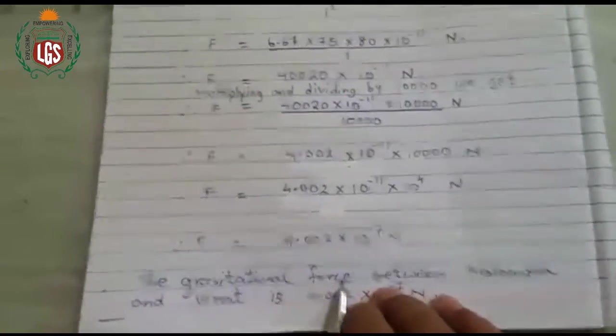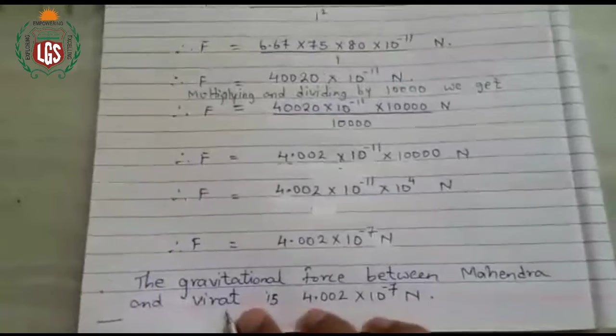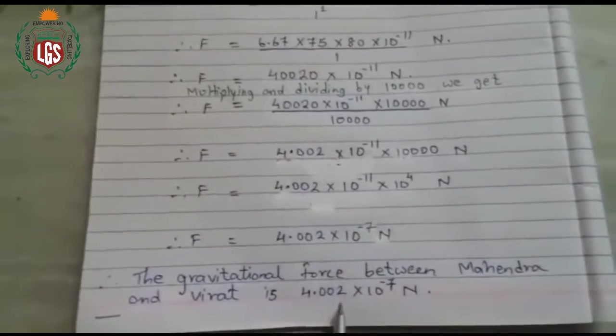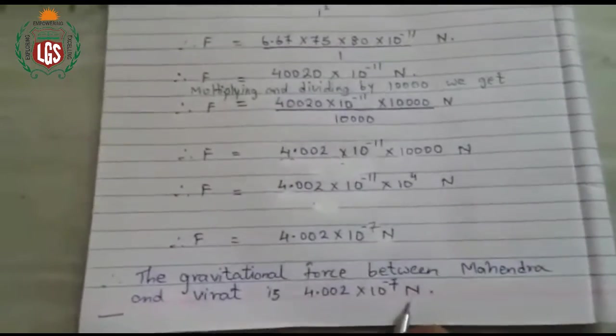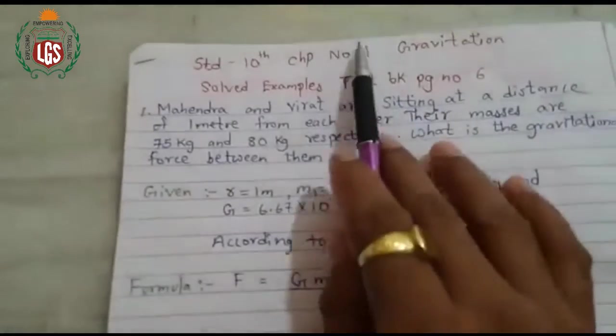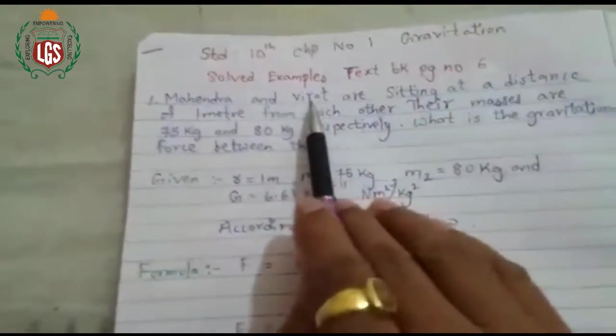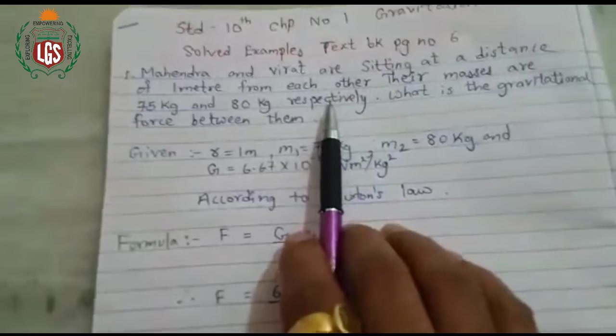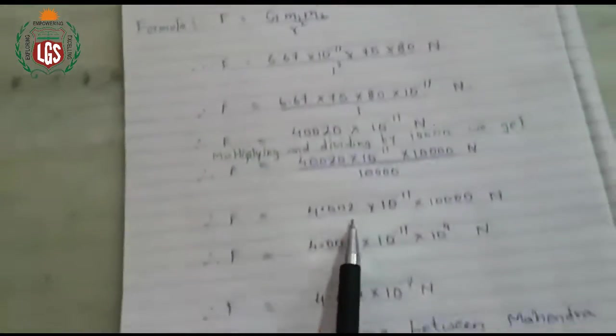The gravitational force between Mahendra and Virat is 4.002 into 10 raise to minus 7 Newton. Is that clear to you? So we have seen this solved example of chapter number 1, Gravitation, from your textbook page number 6.